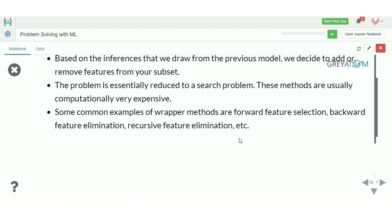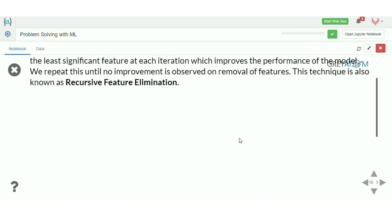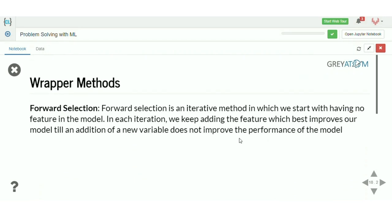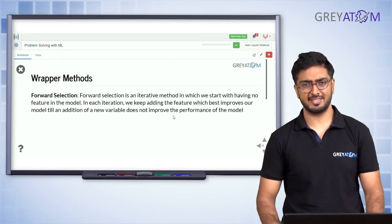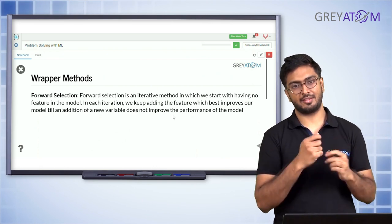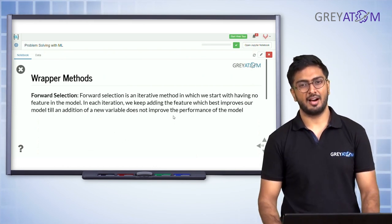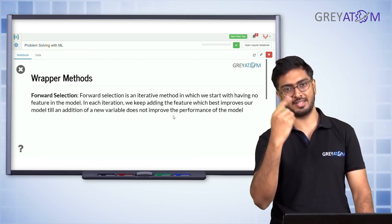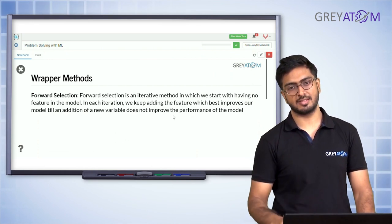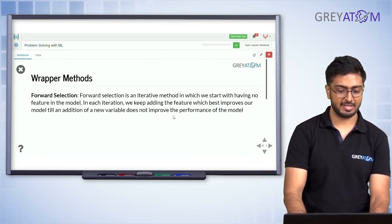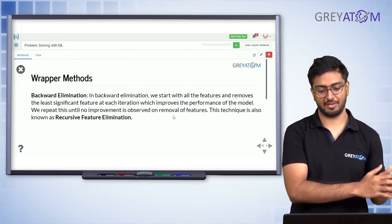Common examples of wrapper methods are forward selection, backward elimination, and recursive feature elimination (RFE). Forward selection starts with no features and iteratively adds the feature that best improves the model, until adding a new feature no longer improves performance. It's the opposite of backward elimination.